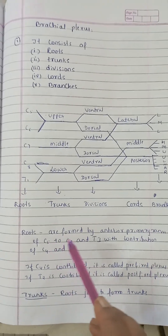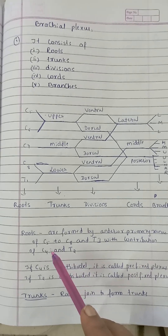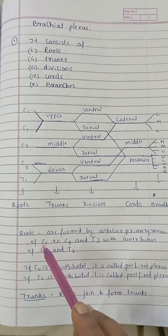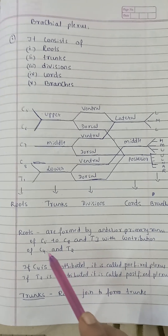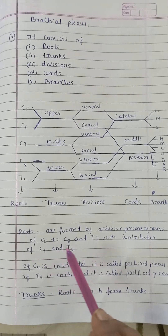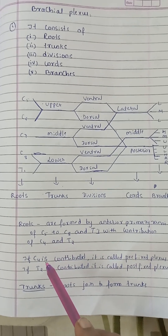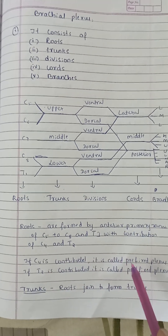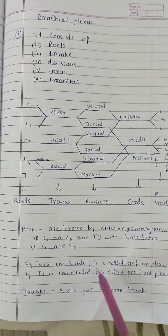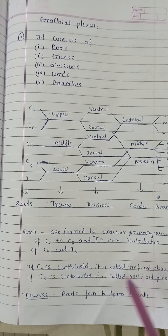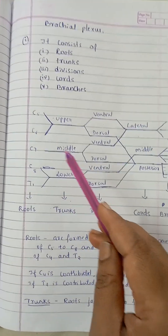Sometimes C4 and T2 also contribute. If C4 contributes, it is named a pre-fixed plexus. If T2 contributes, it is named a post-fixed plexus. The trunks are formed by the joining of these roots: upper, middle, and lower.